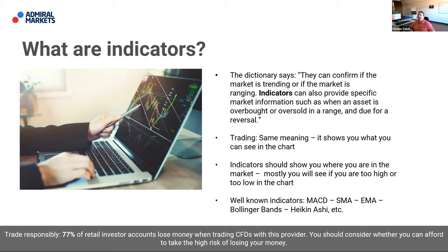So what are indicators? The dictionary says they can confirm if the market is trending or ranging. Indicators can also provide specific market information, such as when an asset is overbought or oversold in a range, or ready for a reversal. Do I use indicators? Yes, I do — but very few and very specifically.